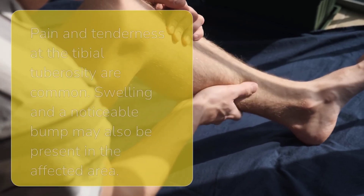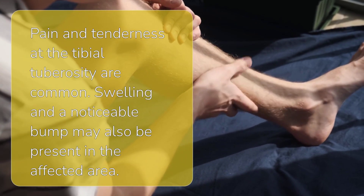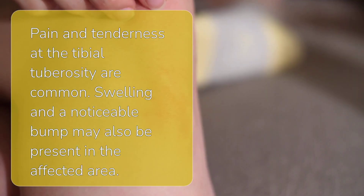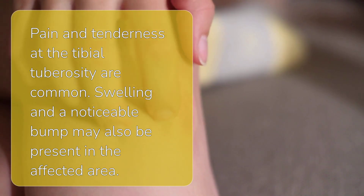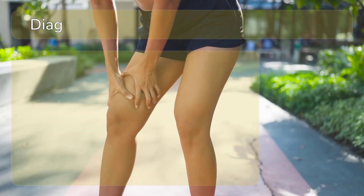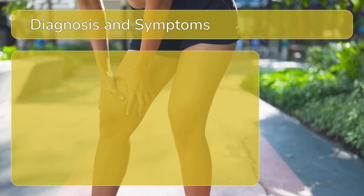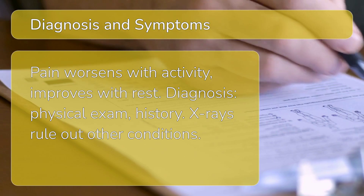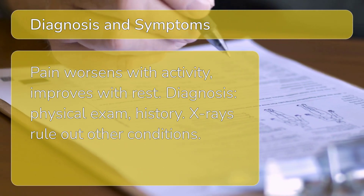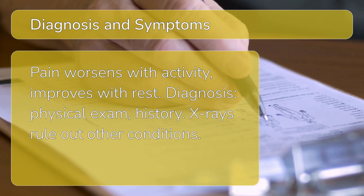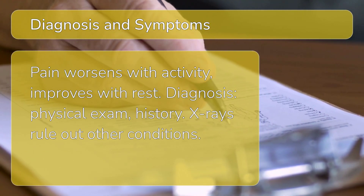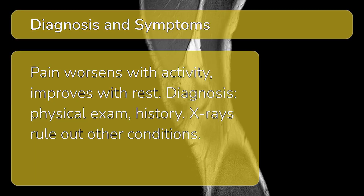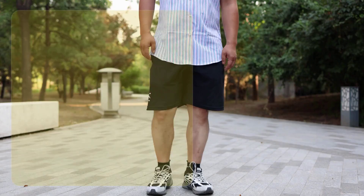The most common symptom is pain and tenderness at the tibial tuberosity. Swelling and a noticeable bump in that area may also be present. Pain usually worsens with activity and improves with rest. A doctor can typically diagnose Osgood-Schlatter disease with a physical exam and review of the patient's medical history. X-rays may be used to rule out other conditions.